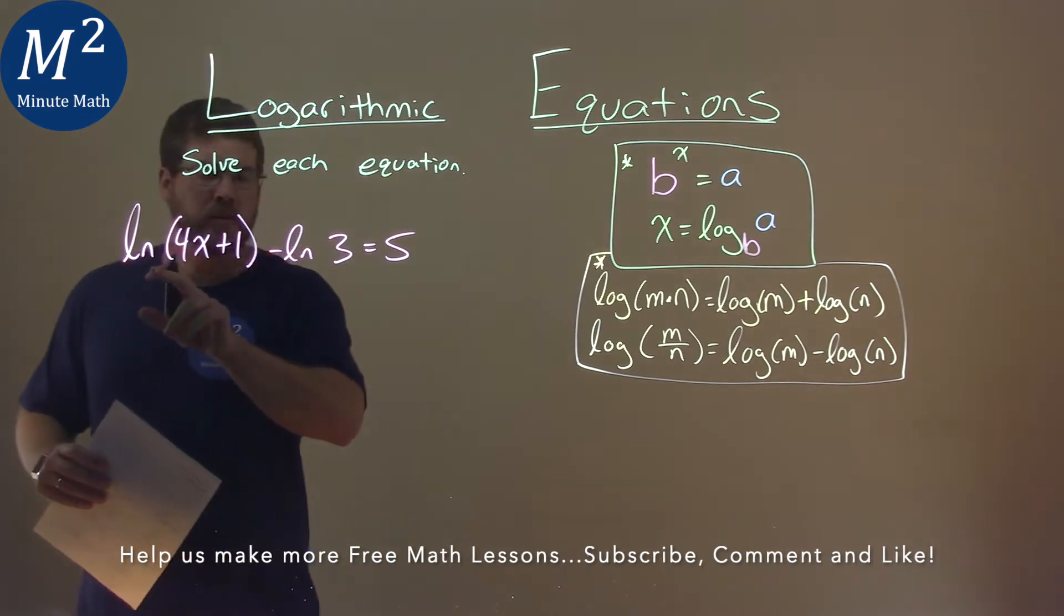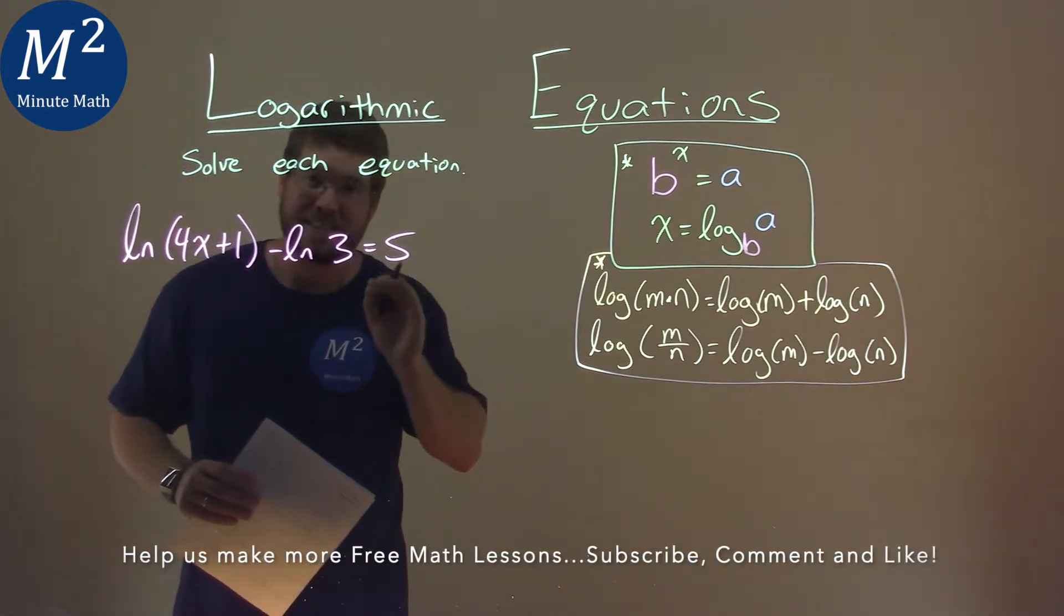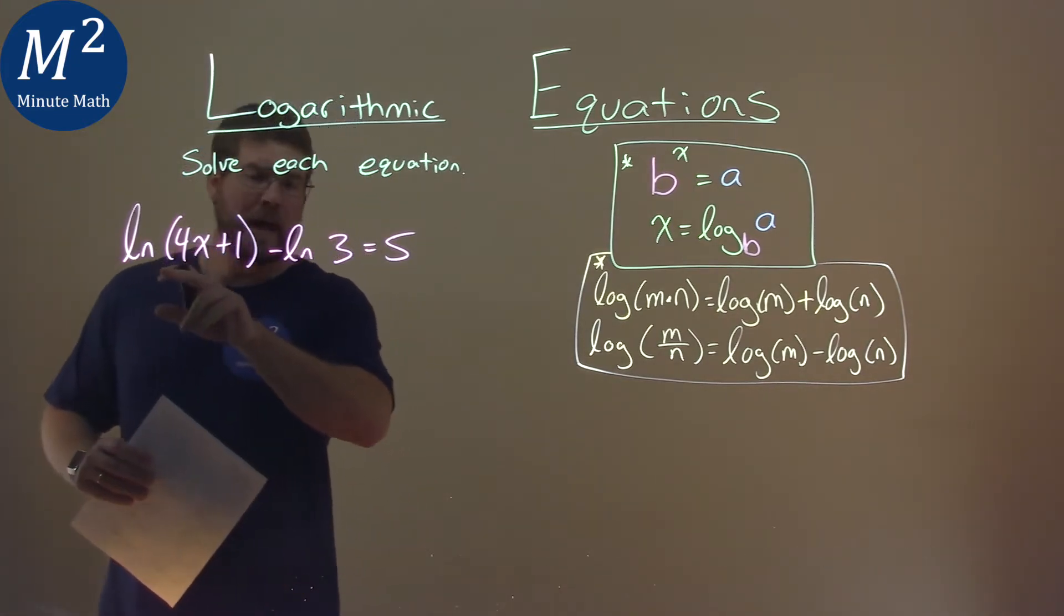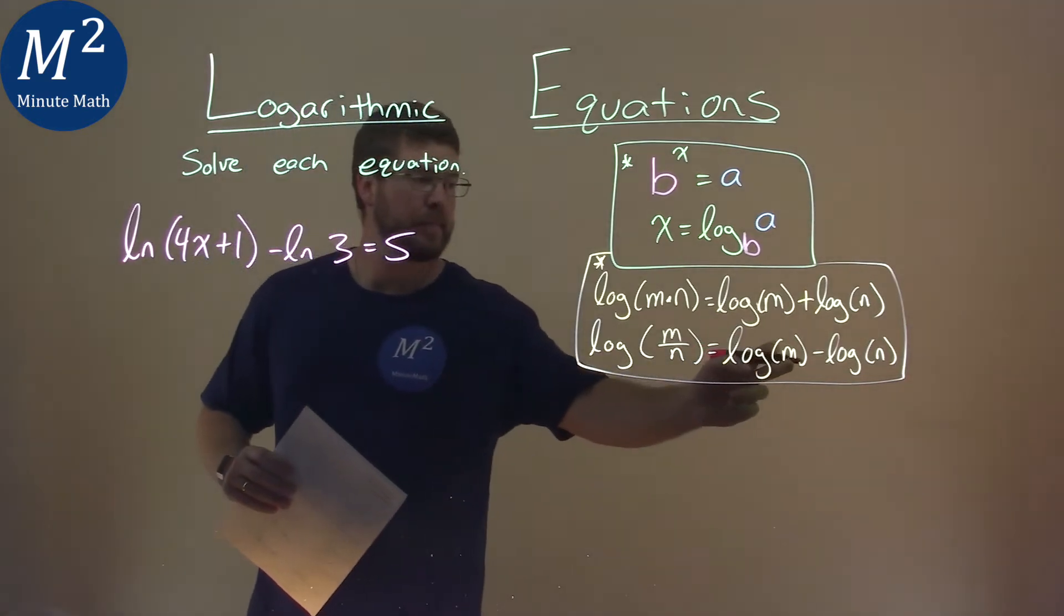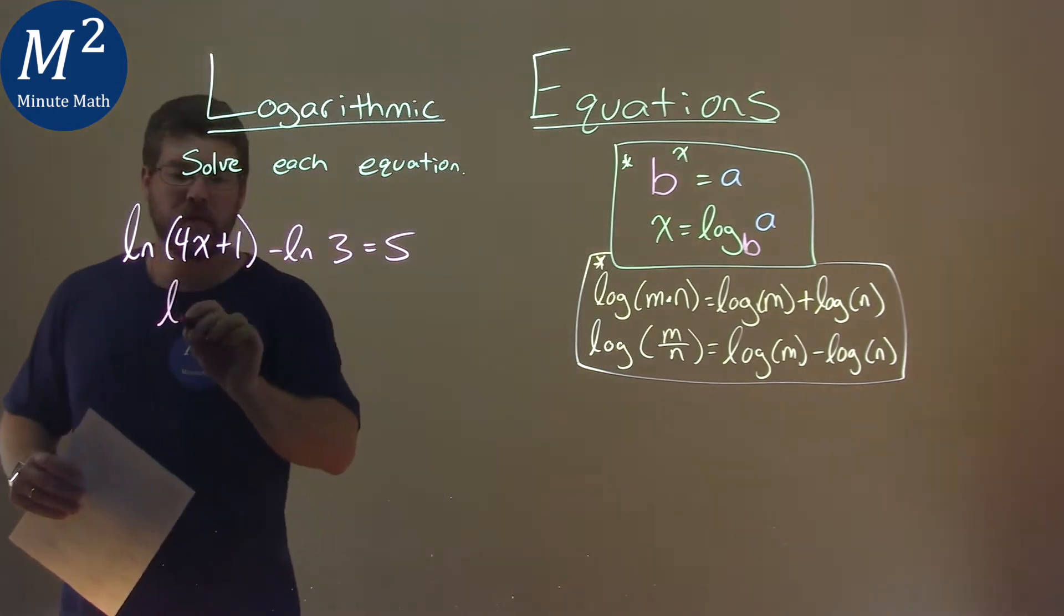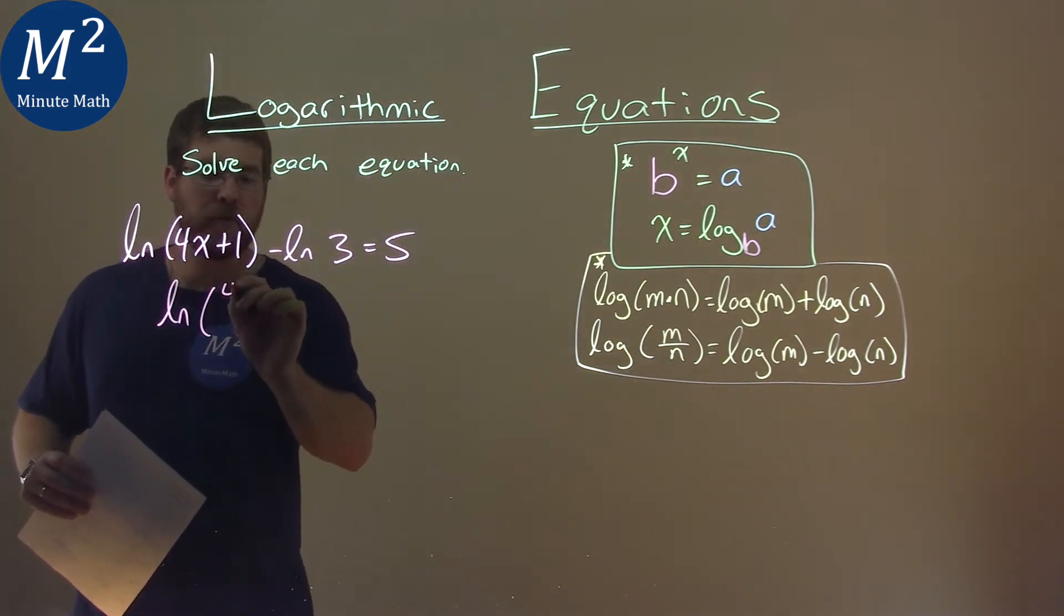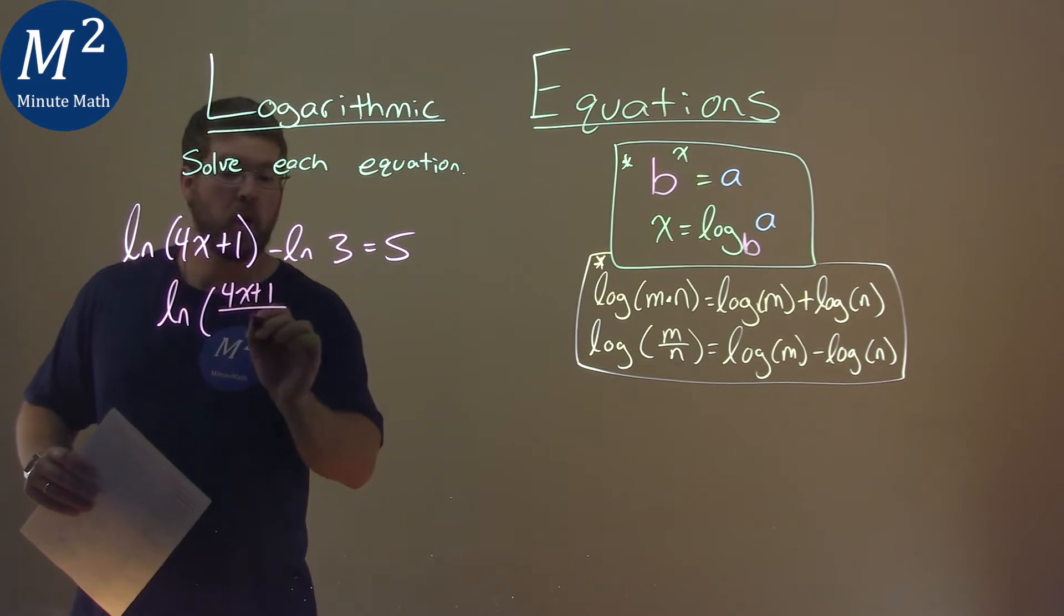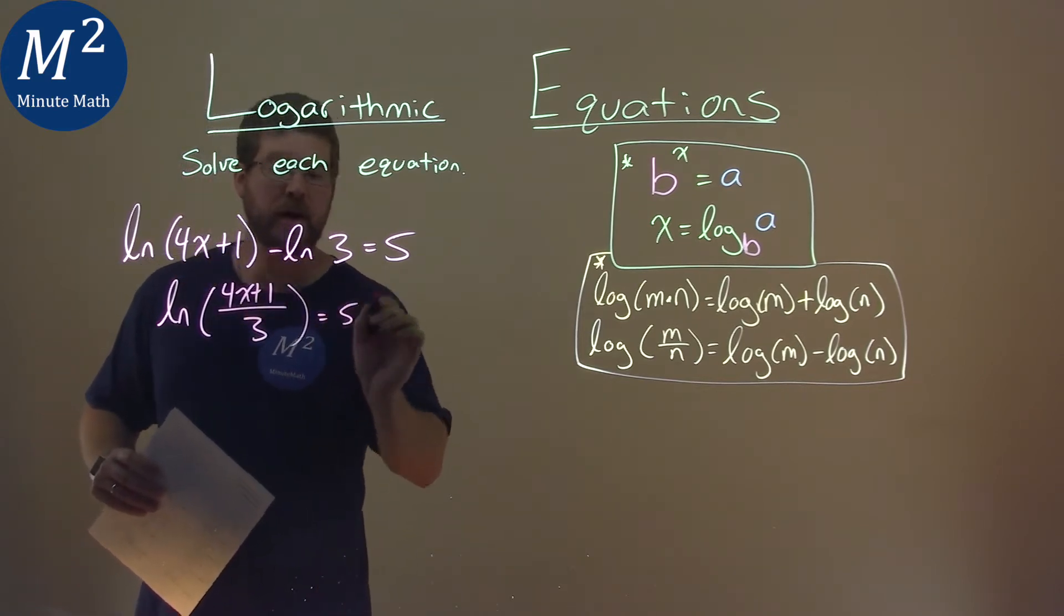Well, remember, natural log is the same as log base e. So we have that here, and we're subtracting it. Our formula says we can combine it to be one logarithm by dividing the insides. So we can rewrite this to be natural log of 4x plus 1 over 3, and that's equal to 5.